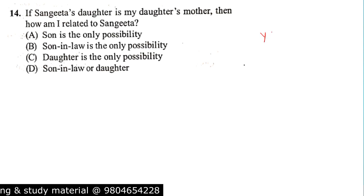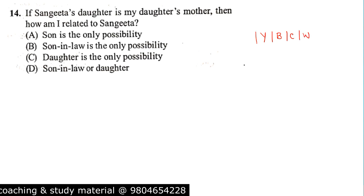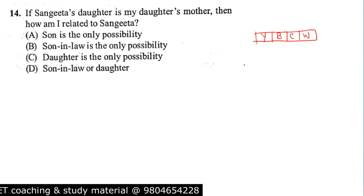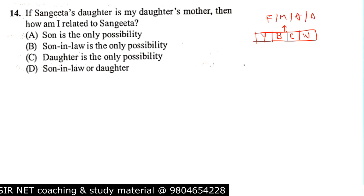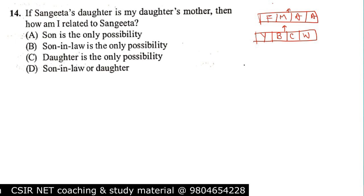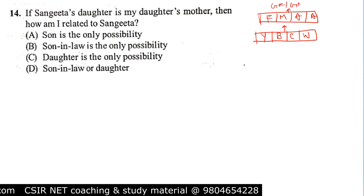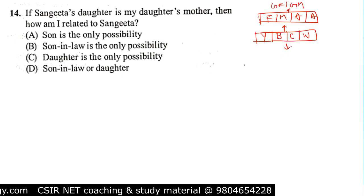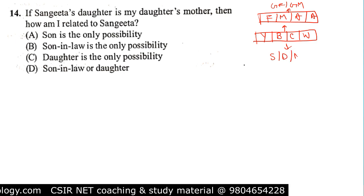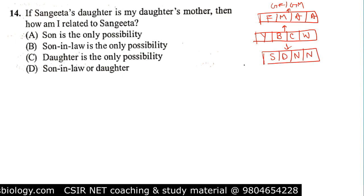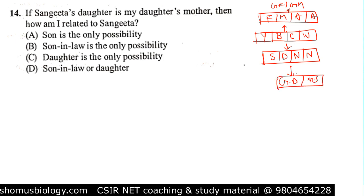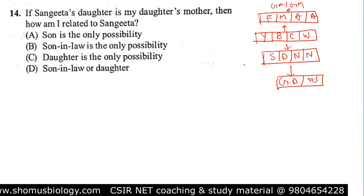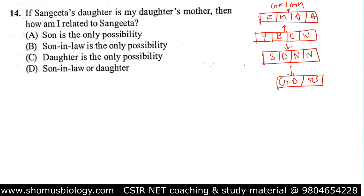Your brother, cousin, and wife are all in the same generation. One generation above will be your father, mother, uncle, and aunt. Two generations above: grandfather and grandmother. One generation below: son, daughter, nephew, niece, granddaughter, grandson, and so on. If you remember this hierarchy, you will be able to answer most of these questions.